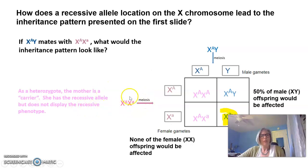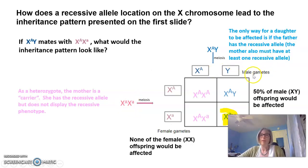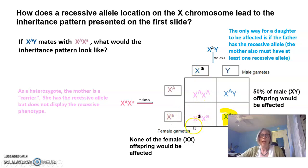The mother, as a heterozygote, is what we call a carrier. She has the recessive allele but doesn't display the phenotype because the dominant allele masks it. The only way for a daughter to be affected is if the father also has the recessive allele and the mother has at least one recessive allele — in which case 50 percent of female offspring would be affected. A father can only pass the Y chromosome to his son, so he cannot pass the X-linked recessive allele to sons.